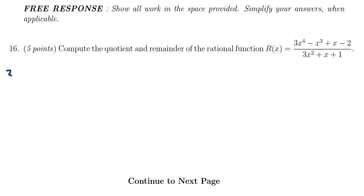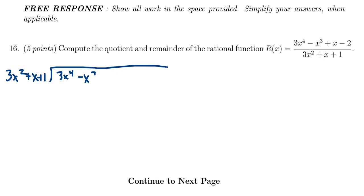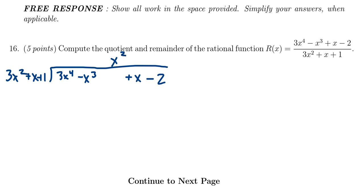Let's set that up. Our divisor is 3x squared plus x plus 1. We need to divide the numerator: 3x to the 4th minus x cubed — there's no x squared term, so I'm leaving a space for it — plus x minus 2. We then ask how many times does 3x squared divide into 3x to the 4th? That's exactly x squared times. We're computing 3x to the 4th divided by 3x squared, which equals x squared.